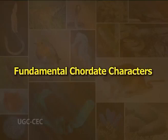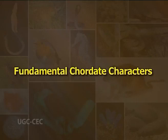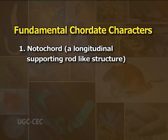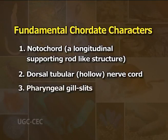This phylum includes a vast group of diverse animals ranging from ascidian to man. All chordates possess three common fundamental characteristics at some stages in their life history. These three common fundamental morphological features are: number one, notochord — a longitudinal supporting rod-like structure; number two, dorsal tubular hollow nerve chord; and number three, pharyngeal gill slits.